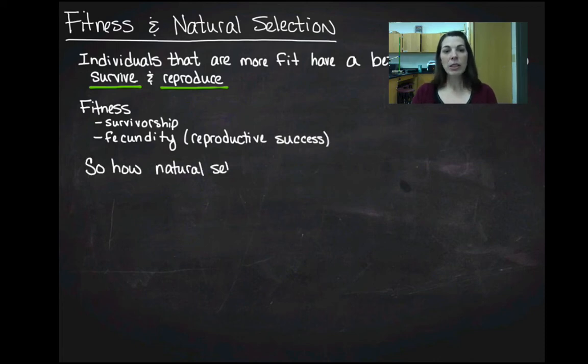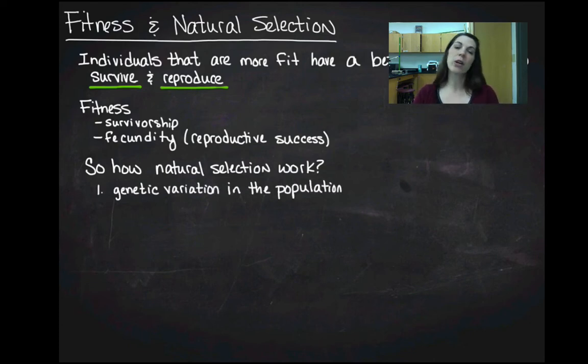So how does natural selection work? Well, there's a couple things that have to happen for natural selection to work. The first thing you have to have is genetic variation within the population. So in our sample population on the first slide, what we had was genetic variation in coat color. We had a white phenotype and we had a brown phenotype, and if those are genetic then we're seeing genetic variation in the population. It has to be genetic because it has to be able to be passed down to offspring through the DNA.